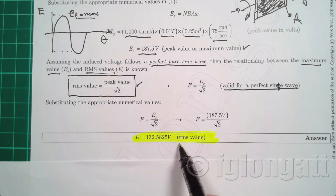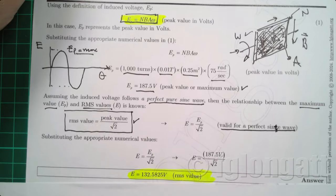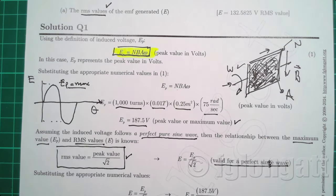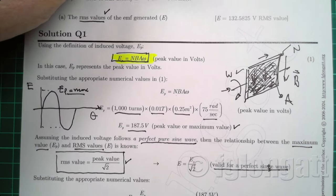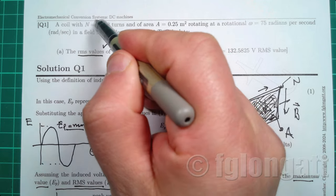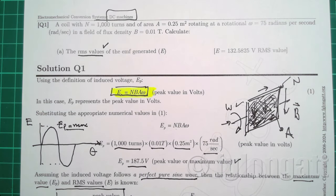And I always suggest my students to include this remark over here, RMS value, because you must understand that this is root mean square, the RMS value. Well, this is a very simple exercise. It was just an application of this very important equation. And that very important equation is used in this new topic that we are covering now, DC machines.